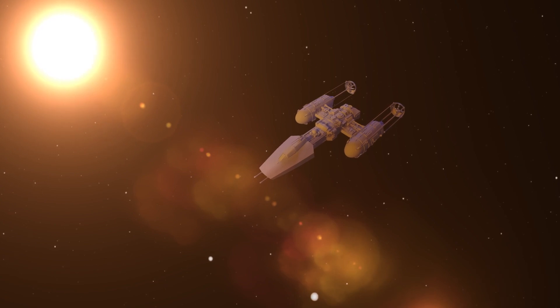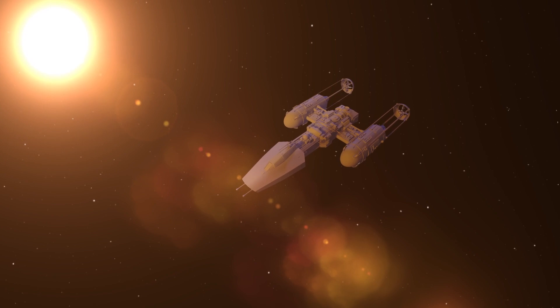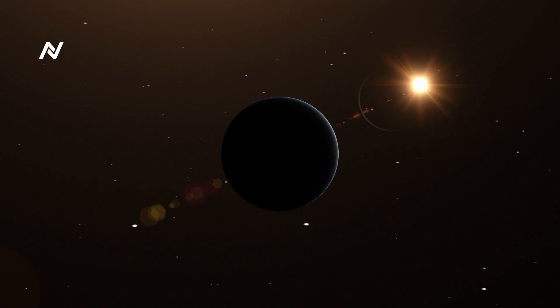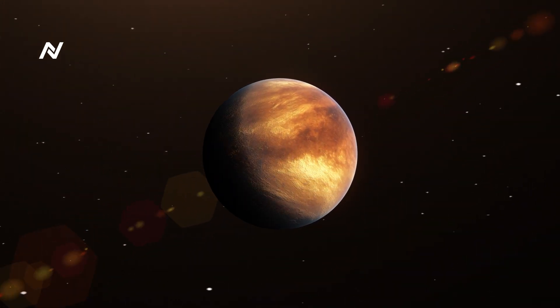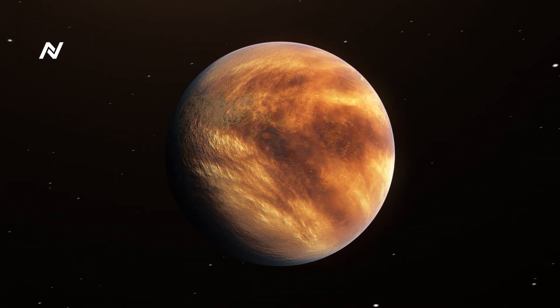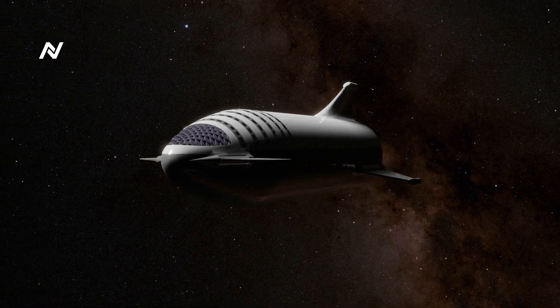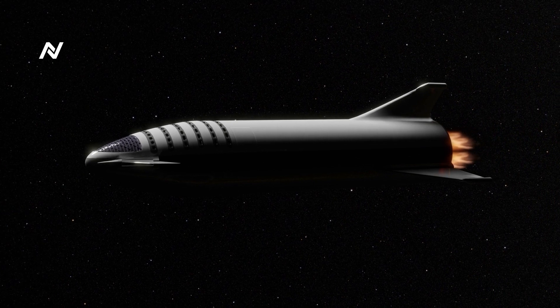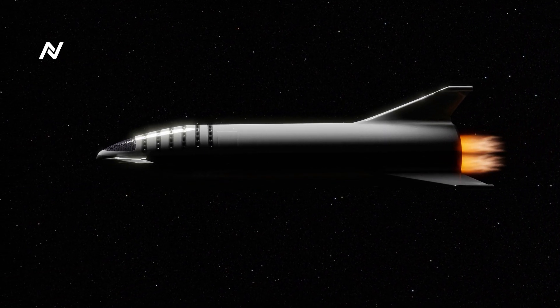Unlike natural objects, which tumble or spin as they travel through space, Icarus remained perfectly stable, hinting at some form of propulsion or control. Its velocity and trajectory were also abnormal, leading many to speculate that we might be looking at an alien artifact. While no definitive conclusions have been reached about Icarus' origin, its metallic sheen and perfect motion suggest an intelligence behind its design. Could this be the first true sign of extraterrestrial technology entering our solar system?